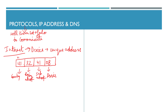For example, if you are in India, the first part is India, the second is Bangalore, the third is Indiranagar, and the fourth is 100 Feet Road A21. Similarly, every single device on the internet has a particular address structured from general to specific.